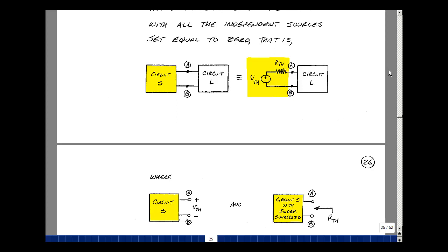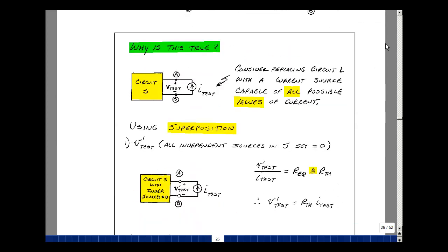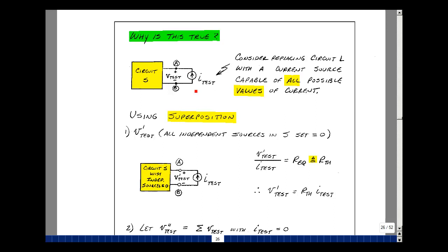Now why is this true? Let's take the box L off and put in place of it a current source. I'll call it I_TEST. This current source is capable of having all possible values of current. Let's solve this problem by using superposition.